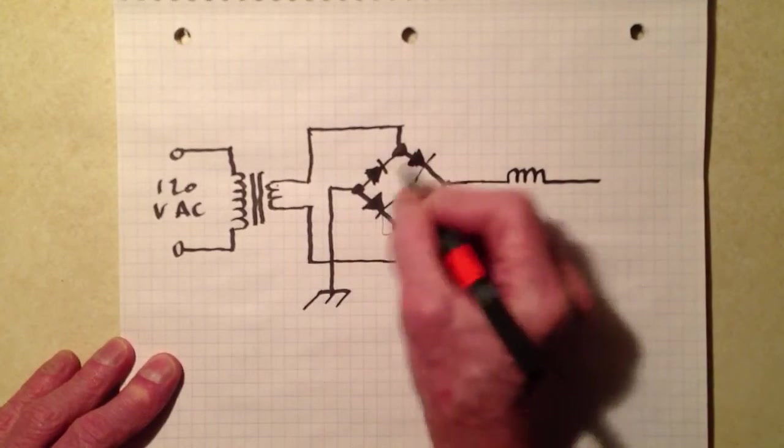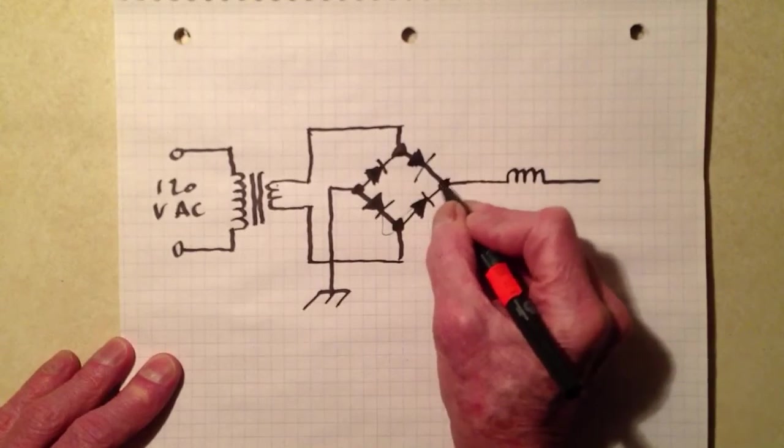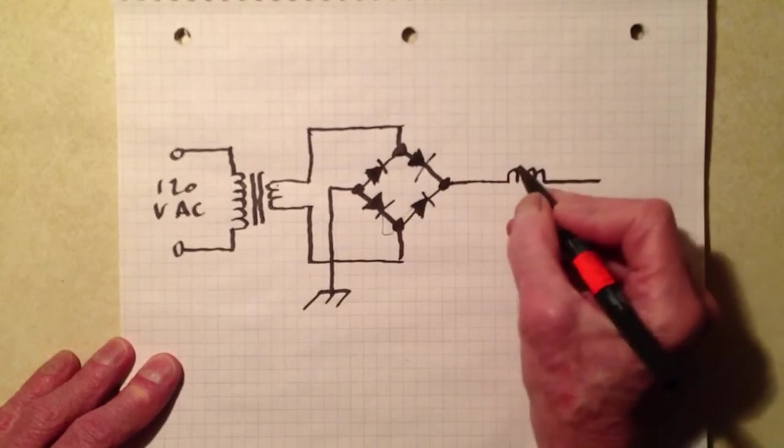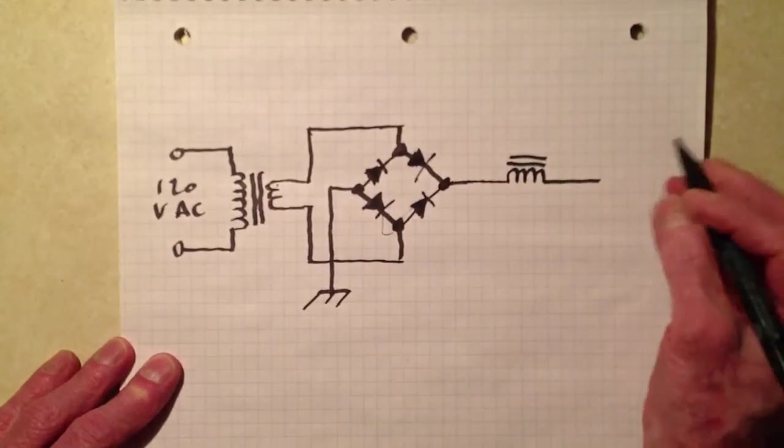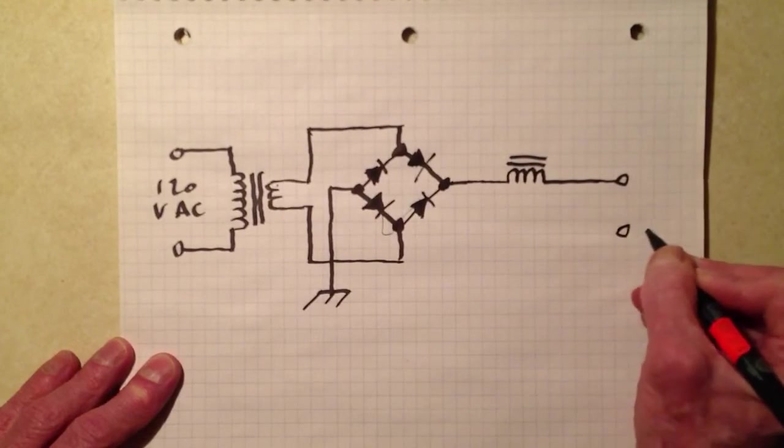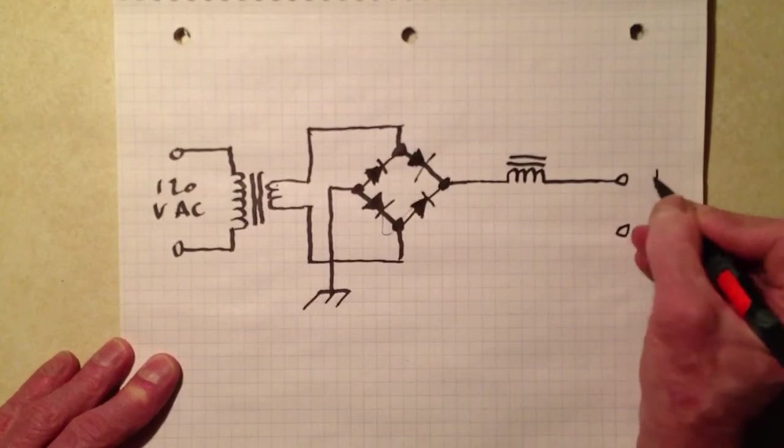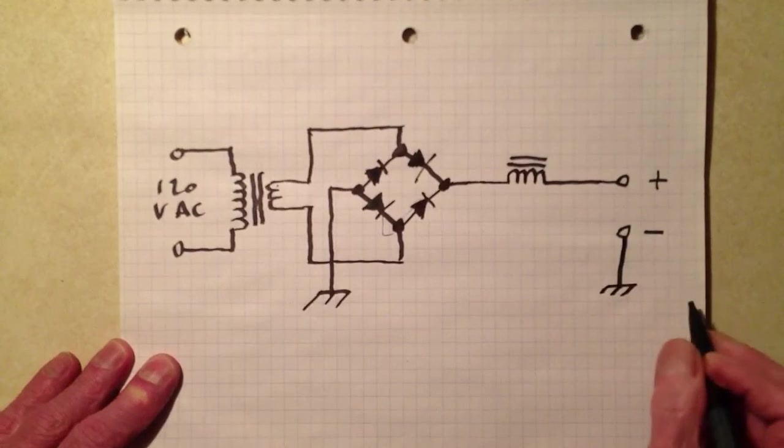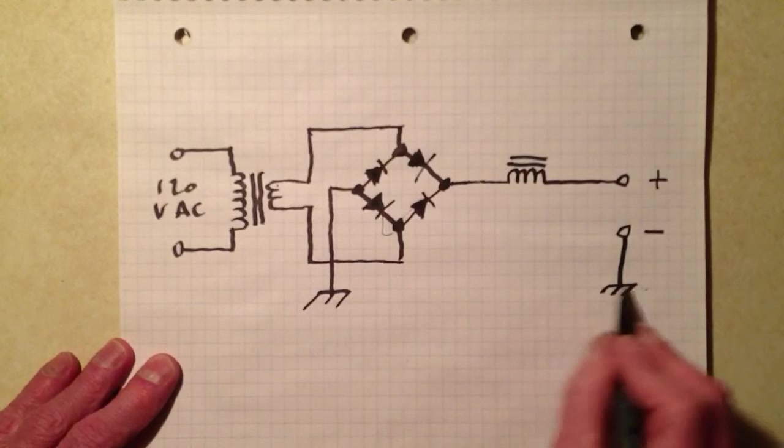So, what we get here is pulsating direct current, right there. However, we want pure direct current at the output here. We don't want pulsating direct current. Negative ground, positive terminal, like that.